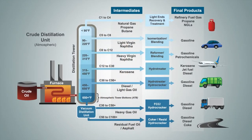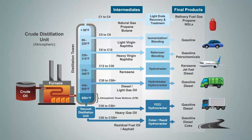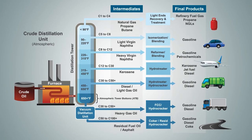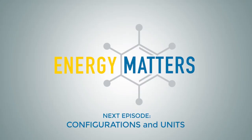So, as you can see, refining begins with crude distillation. From there, material fractions can be sent to other refinery units for further conversion and upgrading. In our next episode, we will be discussing some of those other units and the various configurations in a refinery. Thank you for listening to Energy Matters.